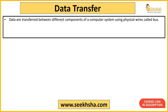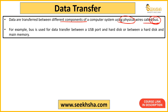Data transfer between different components of a computer system using physical wires is called a Bus — like a bus service. For example, if you have a USB port or USB device, the 'B' in USB stands for Bus. USB stands for Universal Serial Bus, which is an example of this concept.